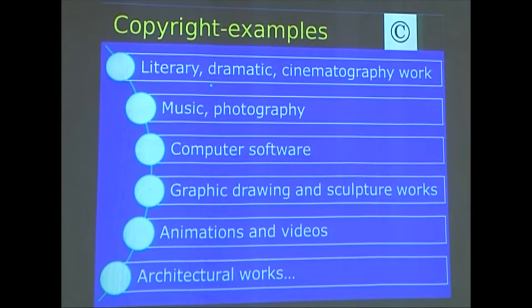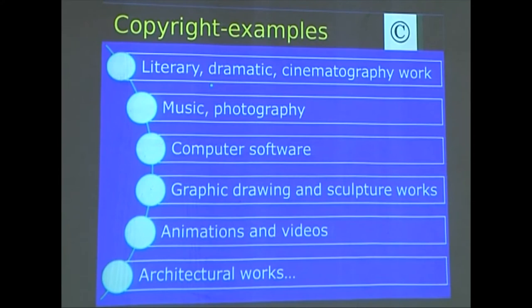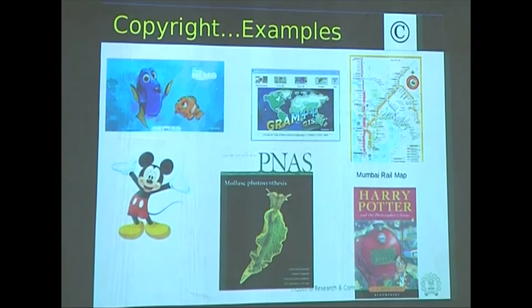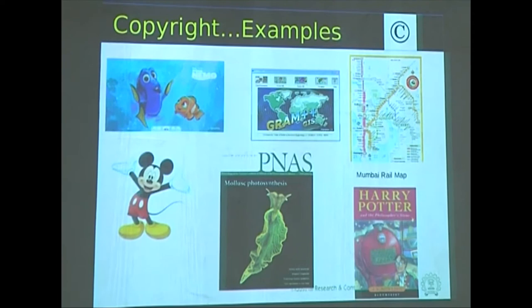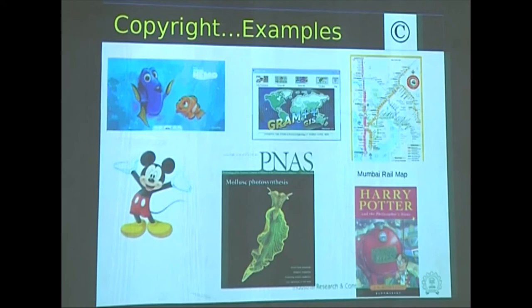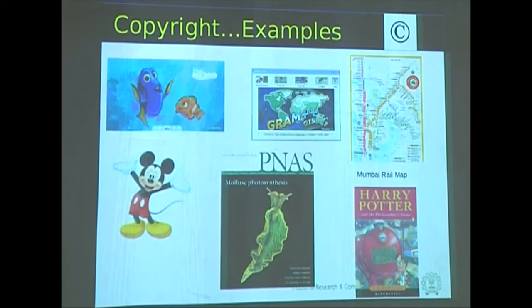Examples of copyrighted works include literary, dramatic, cinematographic work, music, photography, computer software, graphic drawing and sculpture, animations and videos, and architectural works. For example, Finding Nemo and Mickey Mouse, a software developed at IIT Bombay called gram++ which has been accorded copyright protection, journal articles, books like Harry Potter, and a Mumbai rail map generated at IIT Bombay — all are protected by copyright registration. You can do lots of things in your academic institutions to get a copyright — develop software, write a book, both can be accorded copyright.